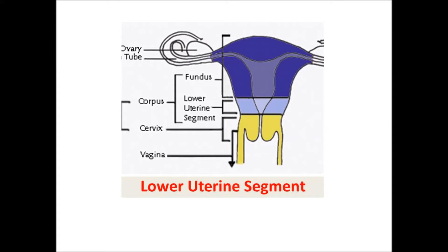Placental migration occurs because when the lower uterine segment forms during the third trimester, the placenta grows towards the fundus and undergoes atrophy towards the lower uterine segment. This is because the fundus has better blood supply. This process is called preferential placental growth or placental migration. In about 0.5% of cases, the placenta does not undergo this process and remains in the lower uterine segment.